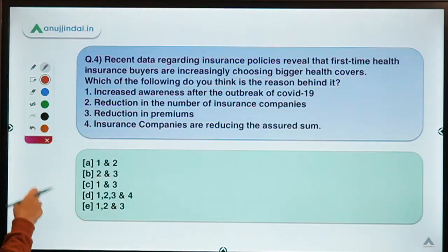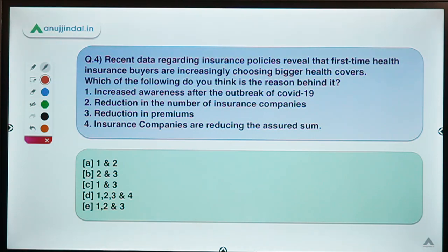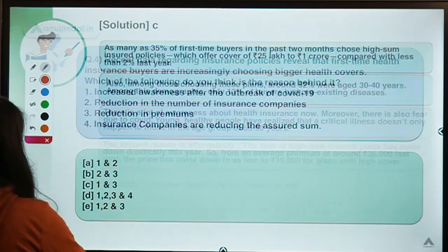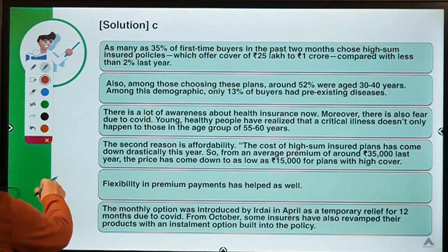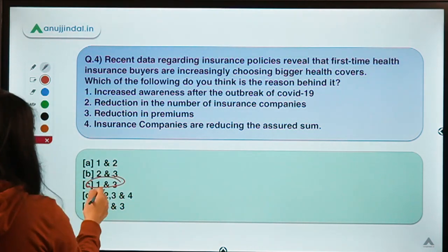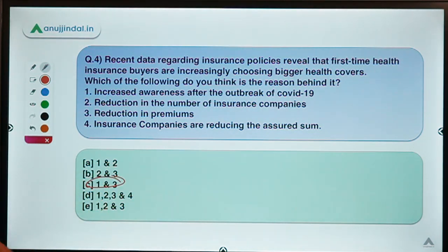Here is the fourth question for today. It says: recent data regarding insurance policies reveal that first-time health insurance buyers are increasingly choosing bigger health covers. Which of the following do you think is the reason behind it? The correct option is option C, meaning reasons 1 and 3 are correct.